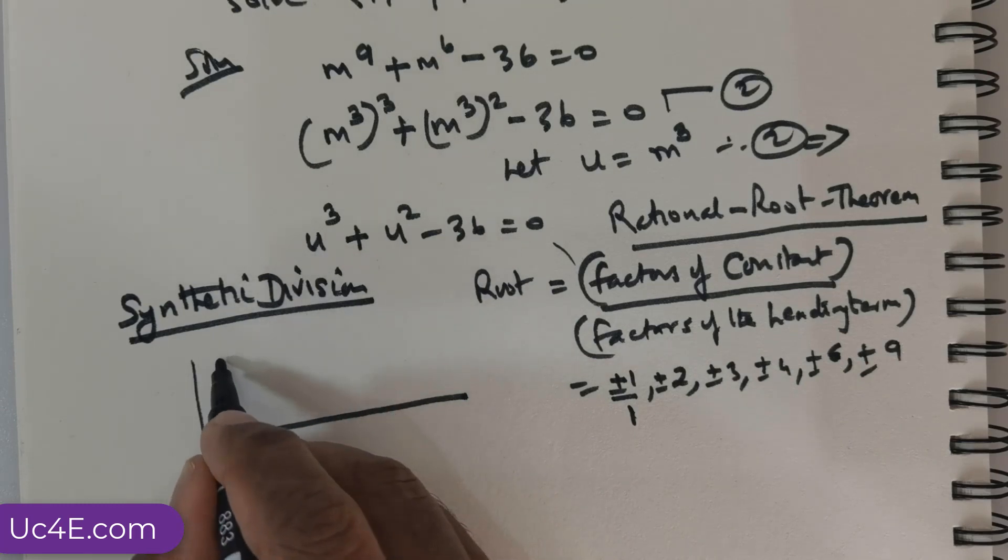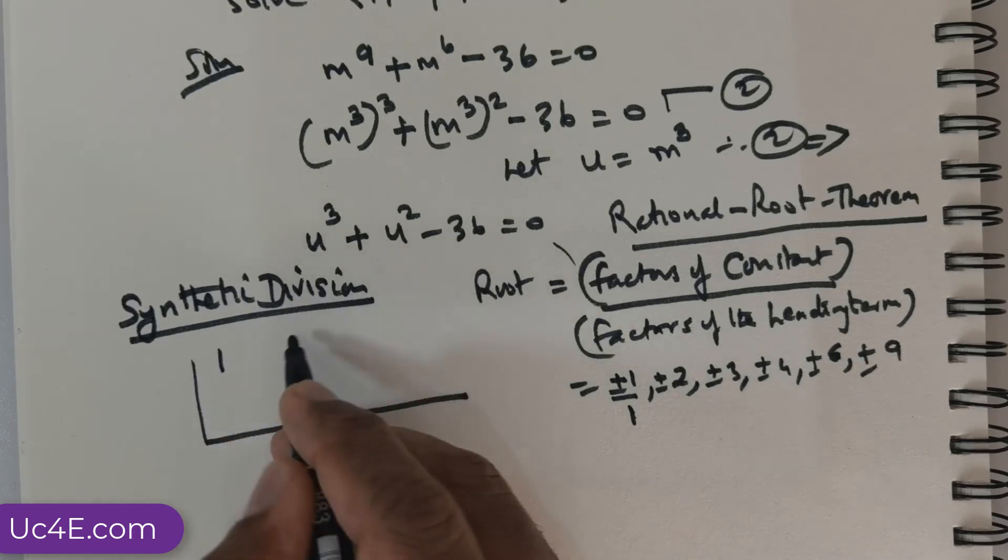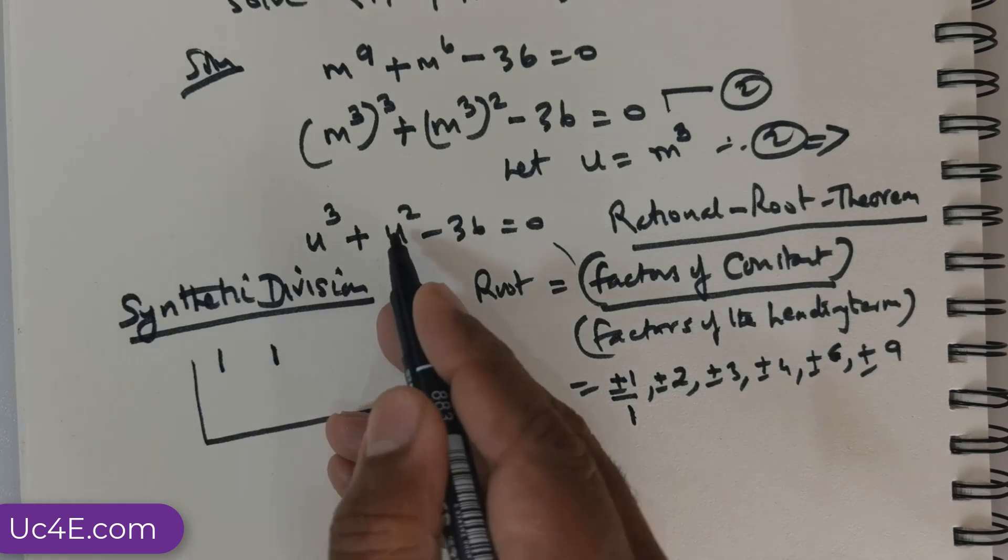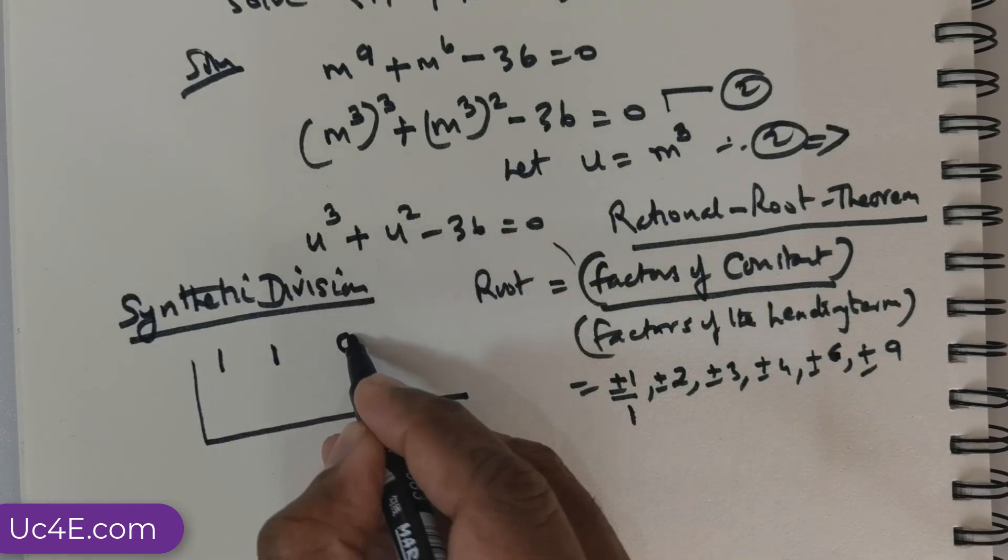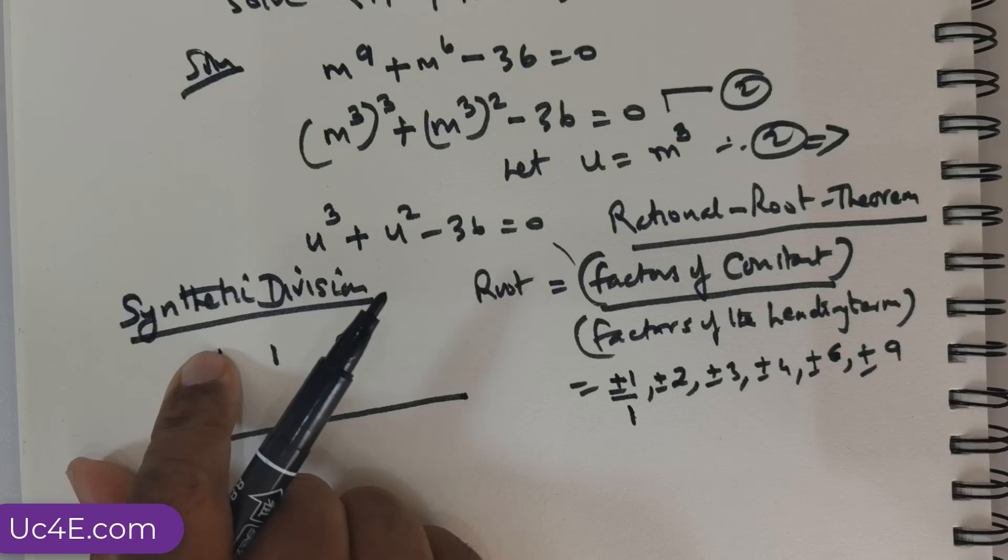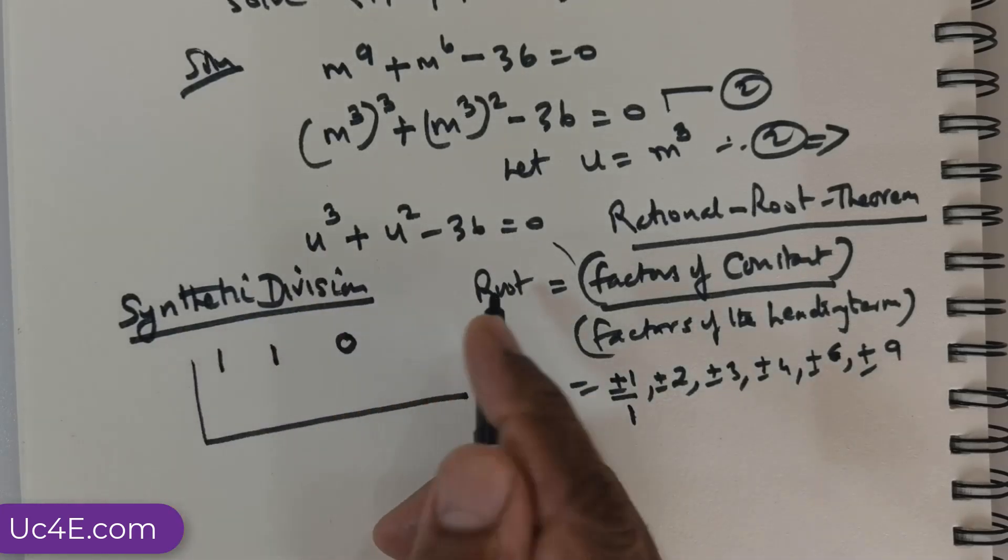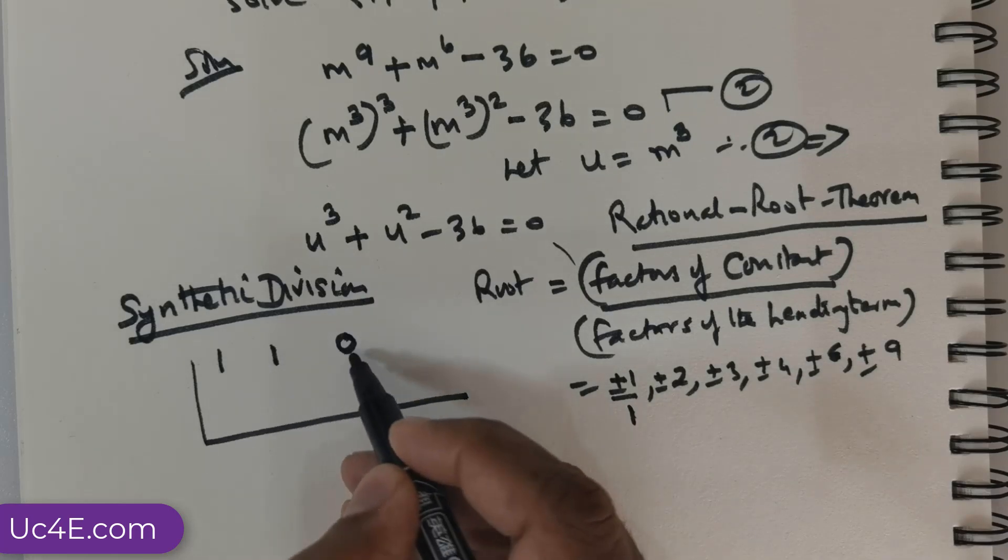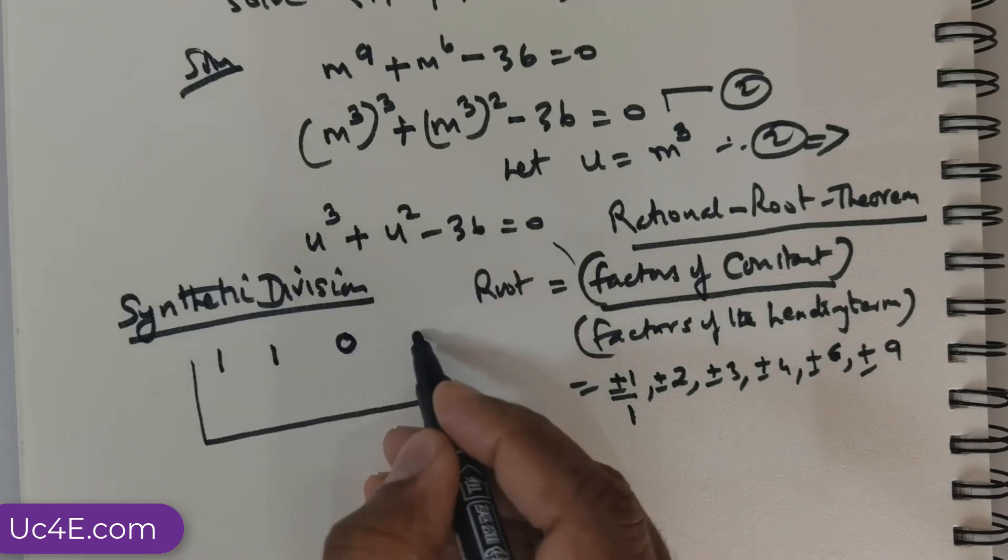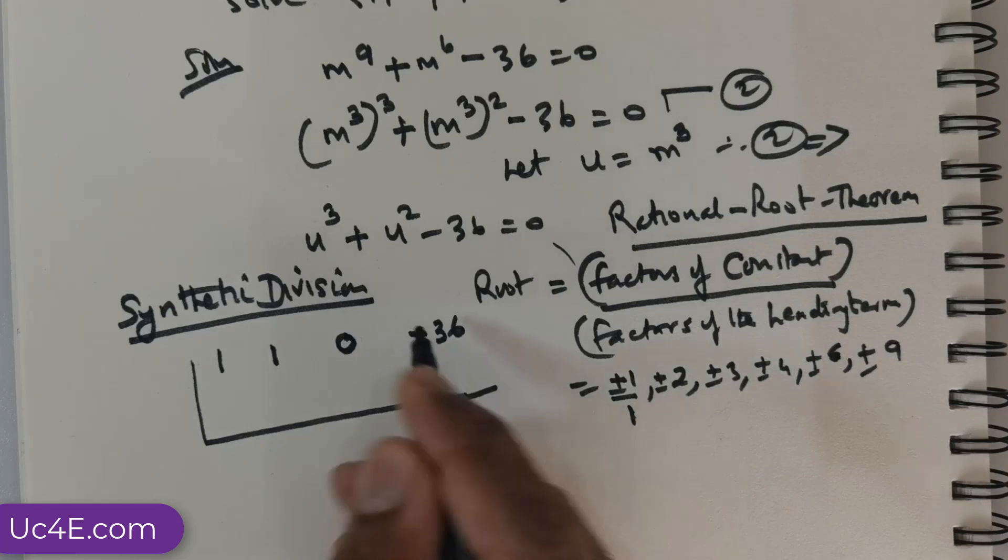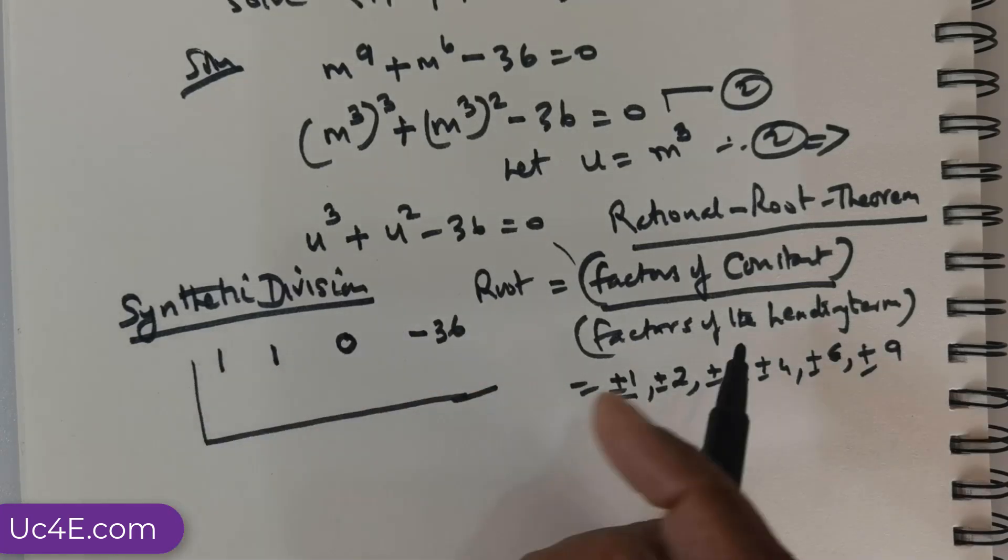Now, how does this work? What we do is we place in the coefficients of this equation. So, the coefficient of u cubed is 1. Coefficient of u squared is 1. Coefficient of u. The u term is missing, right? So, we always start with the highest power and then move down. It is written in descending order. So, it is going to be 0 there because the u term is missing. And the constant is going to be negative 36. You have to represent the coefficients along with the signs.